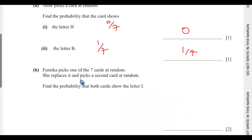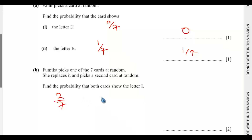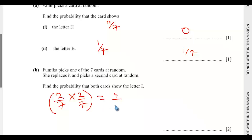Part B. Fumica picks one of the 7 cards at random, replaces it, and picks a second card at random — that is with replacement. Find the probability that both cards show the letter I. Letter I appears 2 times, so the probability of the first selection is 2 out of 7. Since it is with replacement, letter I appears 2 times again, so the second selection is also 2 out of 7. That gives us 4 out of 49.